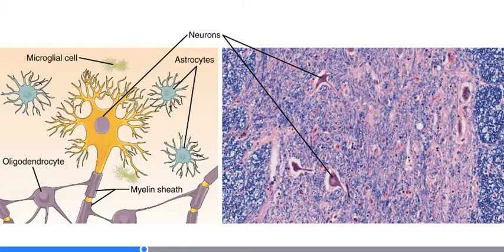Glia outnumber neurons quite a bit — probably about ten to one in most regions of the nervous system. Glia comes from the Greek word for glue. At one time, glia were thought to just be the things that hold nervous tissue together, but we're discovering more and more about the various things that they can do. They support neurons and regulate what's going on in the extracellular space.